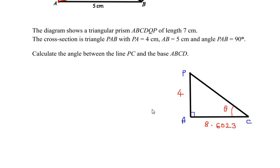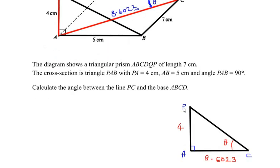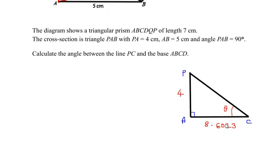This is the right angle triangle PAC with PA as 4 centimeters, AC as 8.6023, and we have to find the angle theta between the line PC and the base ABCD.